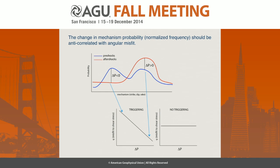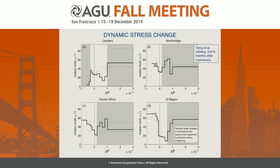If there is no effect, we would expect no correlation. Looking at these four main shocks, we're looking for an anti-correlation. If we look at some of the smaller probability changes — blocking out the larger ones shown in gray — we can see something that looks like an anti-correlation, most pronounced for the El Mayor main shock but maybe present for some of the others. So this is another indicator that dynamic stress triggering is having an effect on the mechanisms, but it may not be the largest effect, because there are some very large changes in mechanism probability not explained by the dynamic stresses.